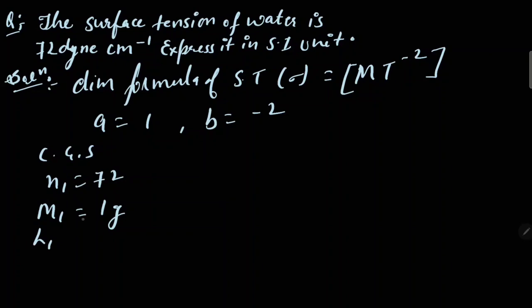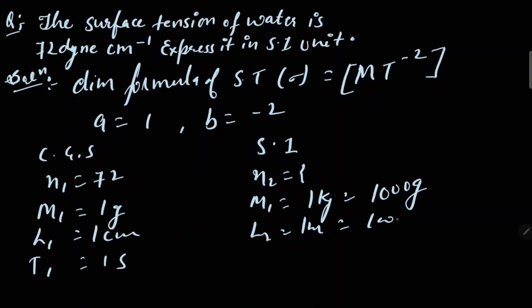Now in SI system, n2 we need to find. m2 is 1 kg and it will be equal to 1000 gram. l2 is equal to 1 meter or 100 centimeter. Since l is not in the dimension formula, we don't have any special requirement here. So t2 will be equal to 1 second.